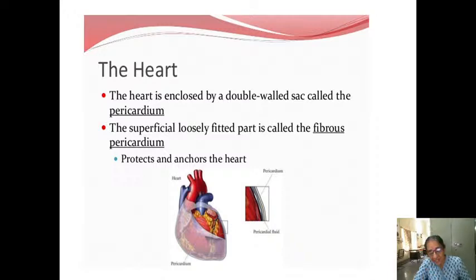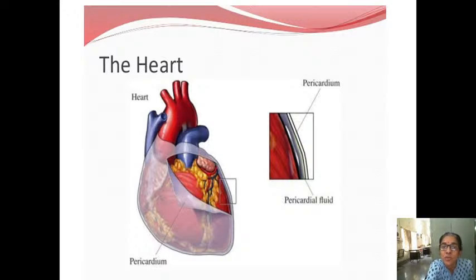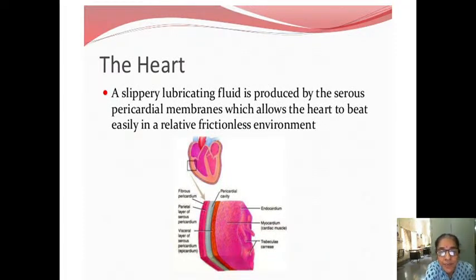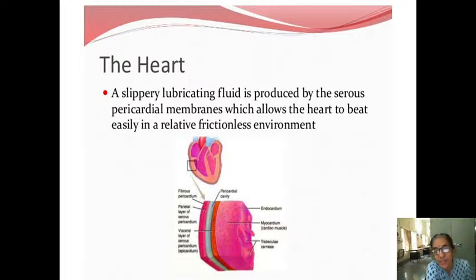There is one more pericardium beneath the fibrous pericardium. Outside first is the fibrous pericardium, then just inside is the parietal layer of the serous pericardium, and then the visceral layer of the serous pericardium. In between the parietal and visceral layers is the pericardial cavity — you can see the grayish color fluid there.